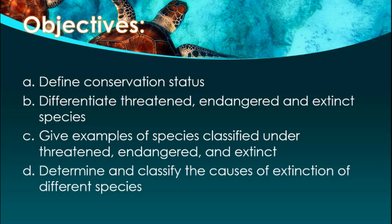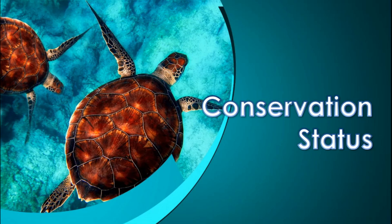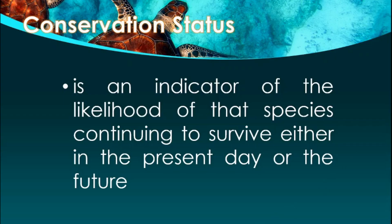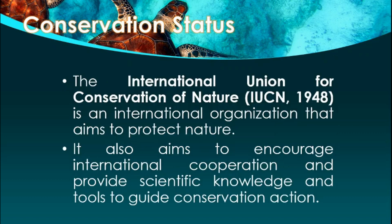So to start, we are going to define conservation status. Conservation status is an indicator of the likelihood of a species continuing to survive either in the present day or the future. The International Union for Conservation of Nature, or the IUCN, which was established in 1948, is an international organization that aims to protect nature and encourage international cooperation and provide scientific knowledge and tools to guide conservation action.